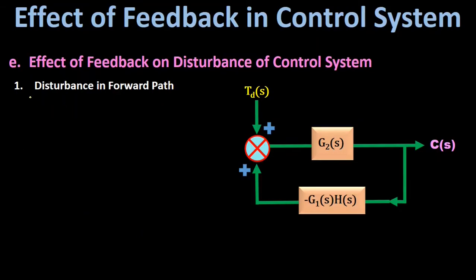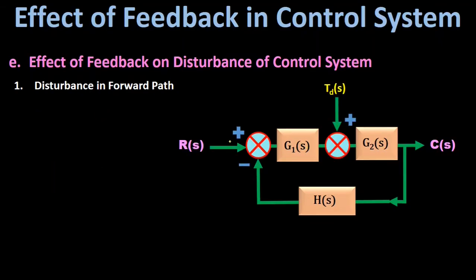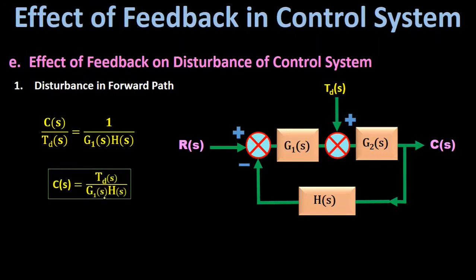The minus signs give plus, so C(s)/T(s) = G2(s) / (1 + G1·G2·H). Since G1·G2·H is much greater than 1, we neglect the 1, giving G2 / (G1·G2·H). The G2 cancels, leaving C(s)/T(s) = 1 / (G1(s)·H(s)). Therefore, to make the effect of disturbance T(s) on the output as small as possible, the gain G1(s) should be selected as large as possible.